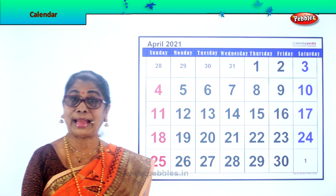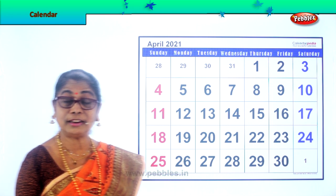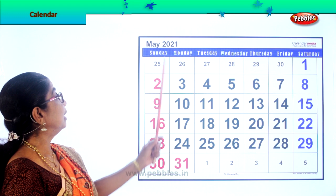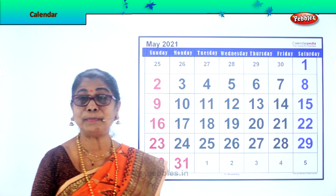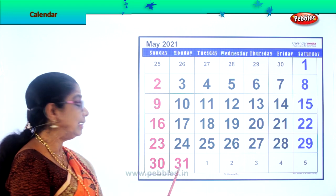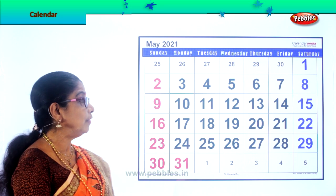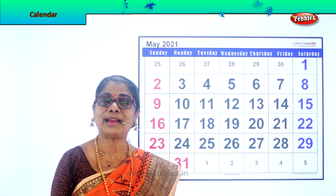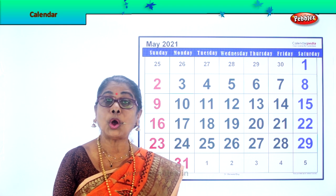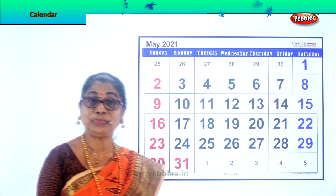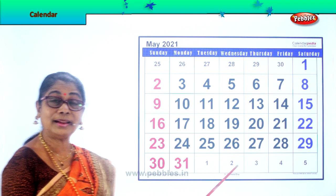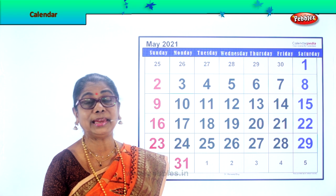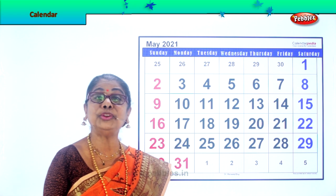Let's look at the calendar of the month of May. Here is the month of May — your favorite month, holiday month. And it has 31 days. You are very happy when the month of May arrives and everybody is in a holiday mood. And you go visiting your uncles and aunts. Let's go on.